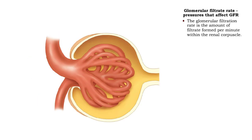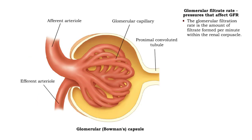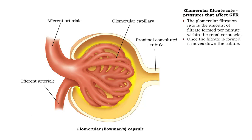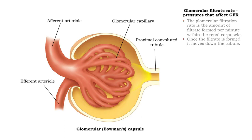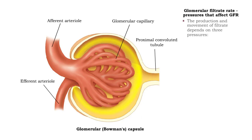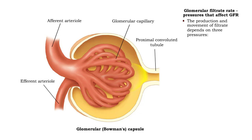The rate that filtrate is formed within the renal corpuscle is known as the glomerular filtration rate. Once the filtrate is formed, it moves down the tubule. The production and movement of filtrate depends on three pressures.